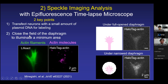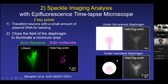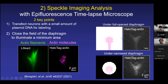The second key point is to close the field diaphragm of the microscope to illuminate a minimum area, because the signals of a single molecule are very weak. When the diaphragm is fully open, we cannot see the signal. But when the area diaphragm is appropriately narrowed down, the basal signal is diminished and speckles of a single molecule appear. This is similar to observation of stars in the sky: when city light is bright, we cannot see dim stars, but when the city light is turned down, we can see many stars clearly.